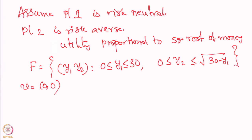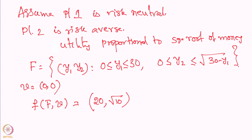We will leave it as an exercise, but the solution in this case is (20, √10), corresponding to a wealth sharing of 20 and 10. This is another interesting example illustrating the Nash bargaining rule.